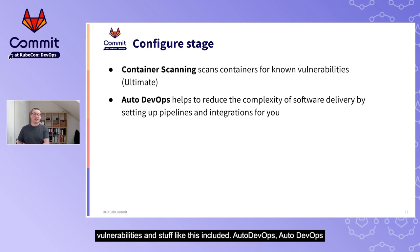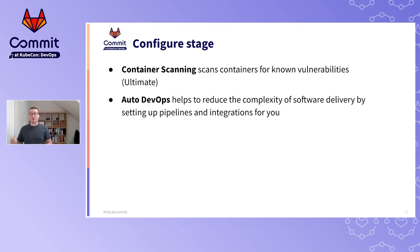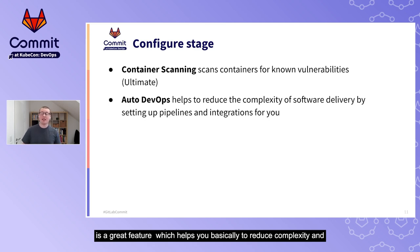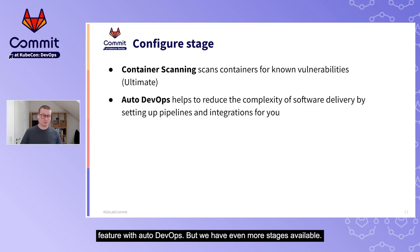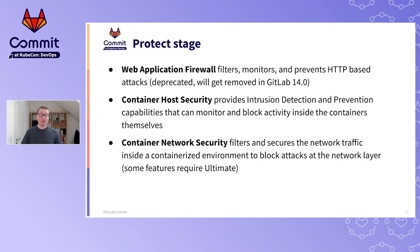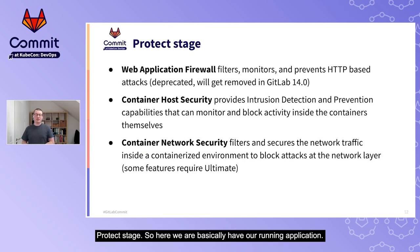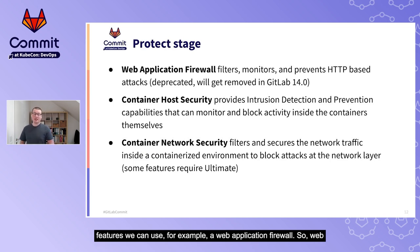For the configure stage, GitLab can scan containers after build to ensure no security vulnerabilities are included. Auto DevOps is a great feature that reduces complexity by integrating all these security features into your pipeline out of the box - you just need to enable it. For the protect stage, GitLab provides a Web Application Firewall that monitors and filters HTTP requests and attacks.